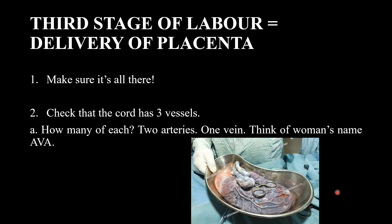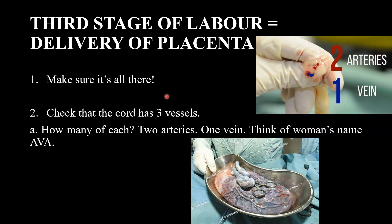Check that the membranes are complete. Also inspect the umbilical cord — the cord has 3 vessels. A mnemonic to remember: AVA — A for artery, V for vein, A for artery — so two arteries and one vein. Check all of these during the placenta inspection.